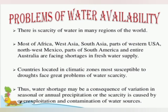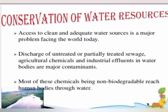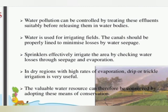There is scarcity of water in many regions of the world. Most of Africa, West Asia, South Asia, parts of western USA, northwest Mexico, parts of South America, and entire Australia are facing shortages in fresh water supply. Countries in climatic zones susceptible to droughts face great problems of water scarcity. Water shortage may be a consequence of variations in seasonal or annual precipitation, or due to overexploitation and contamination of water resources. Discharge of untreated or partially treated sewage, agricultural chemicals, and industrial effluents into water bodies are major contaminants. Many infections in our body enter through contaminated water, so water must be kept pure.